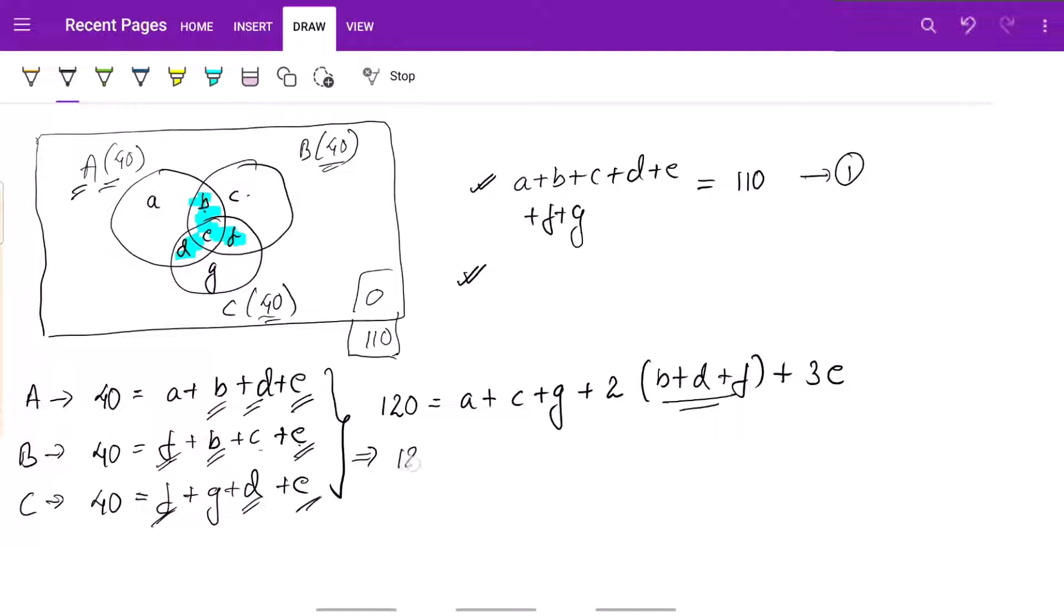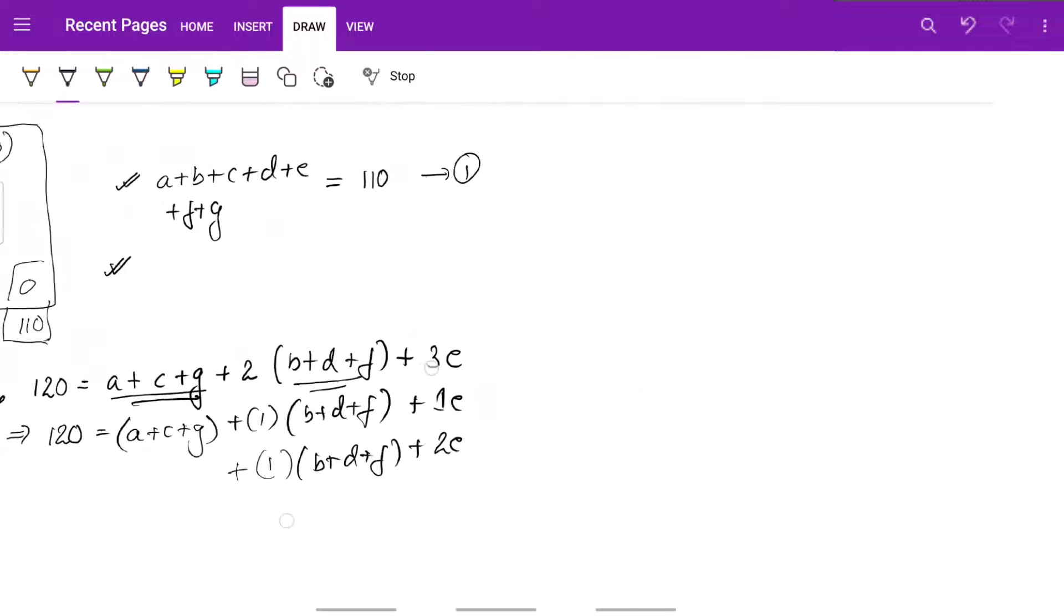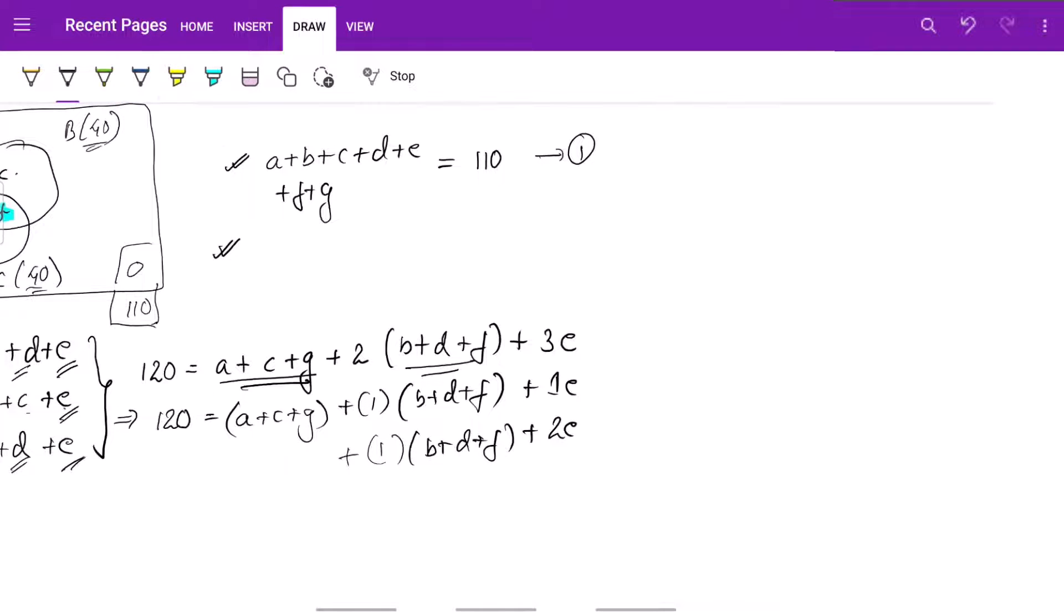Now, if you further simplify it, you will get 120 equals a plus c plus g plus 1 times b plus d plus f plus 1 times e. Now what's left plus 2 times, plus another 1 times b plus d plus f and again 2 times e is left.